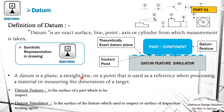A datum is a plane, straight line, or point used as a reference when processing the material or measuring the dimension of the target. The datum feature is the surface of the part to be inspected. The datum simulator is the surface used to inspect — it is the surface of the inspection tooling. Normally we place our component and hold it using an instrument; that instrument is the datum feature simulator. Once we hold and fix the component, we start inspection and take dimensions for that part. The theoretical exact datum plane is where it makes contact, shown by the contact points.